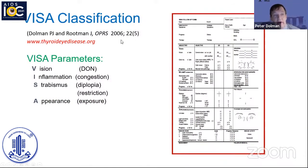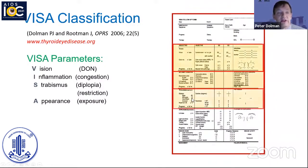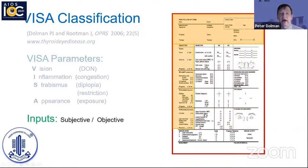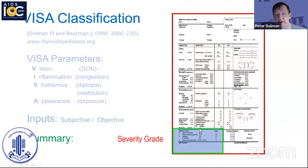I will introduce the VISA classification, which ITEDS has adopted and which Jack Rootman and I introduced in 2006. It tries to record severity and activity in one clinical recording form and focuses on four disease severity parameters: Vision or optic neuropathy, Inflammation/congestion and soft tissue changes, Strabismus including diplopia, and Appearance and exposure changes. It incorporates both the patient's subjective input for each parameter as well as measurable objective changes — for example, in vision: central vision, color vision, pupil response, and appearance of the optic nerve.